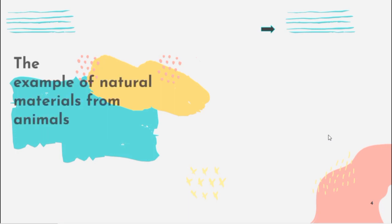The example of natural materials from animals. First, wool. We can get wool from sheep and we use wool to make sweaters.